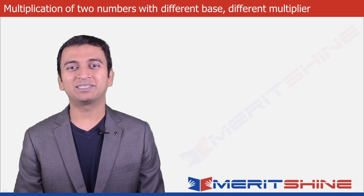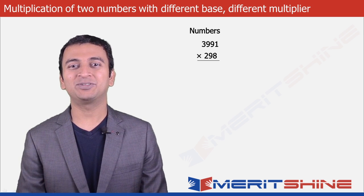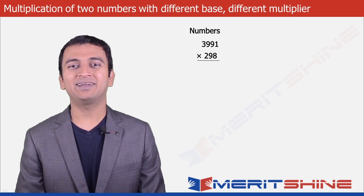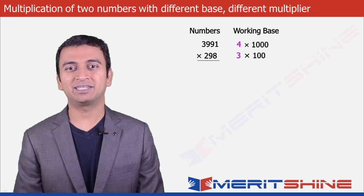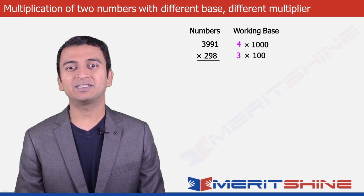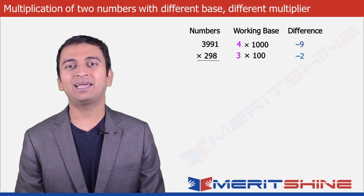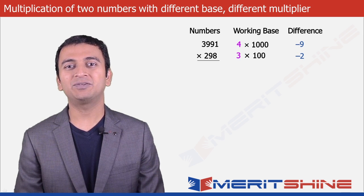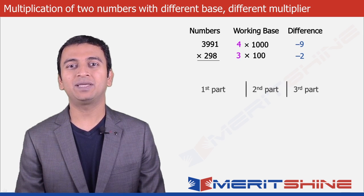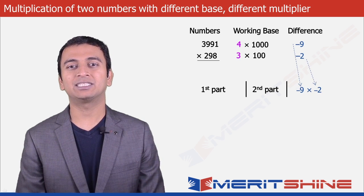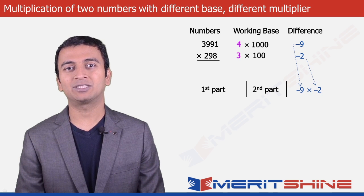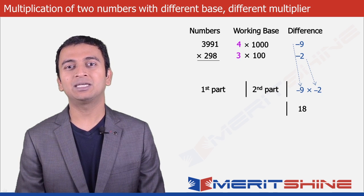Let us now try to multiply 3991 and 298. Here our working bases would be 4 into 1000 and 3 into 100 respectively. And our differences would be minus 9 and minus 2. We can now proceed to write down our answer in three parts. The third part would be the product of the differences, which is minus 9 into minus 2, giving us plus 18.